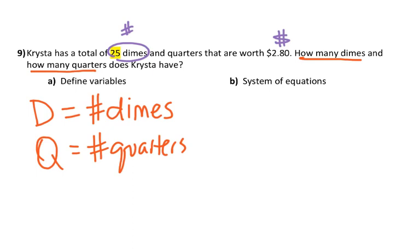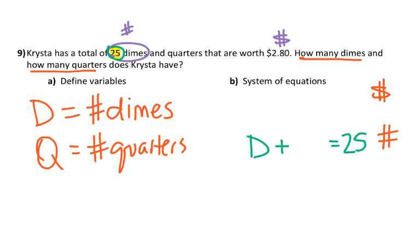Now for our system, we write an equation about value and an equation about how many — order doesn't matter. For how many: the number of dimes plus the number of quarters equals 25 total coins. For value: the total value of everything is $2.80, which comes from the dimes and quarters combined.